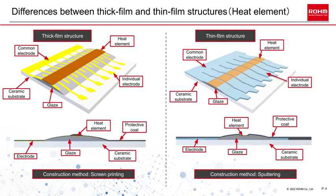Thermal printheads are broadly divided into two categories based upon the type of heat element: thick film and thin film. First on the left is the thick film structure. This head type is produced by screen printing the heating element, resulting in a thicker film than the thin film type head on the right.